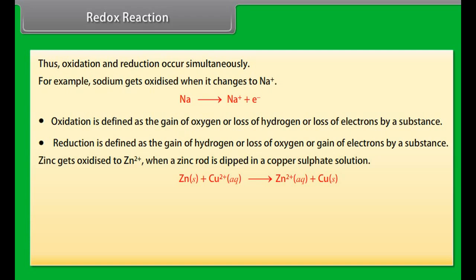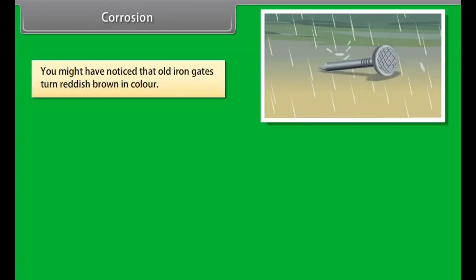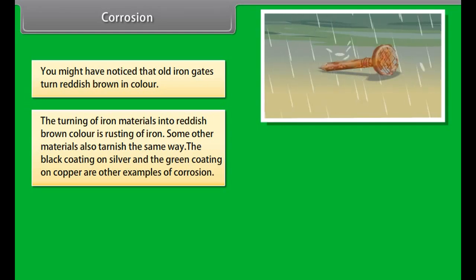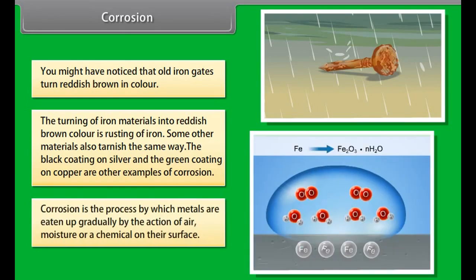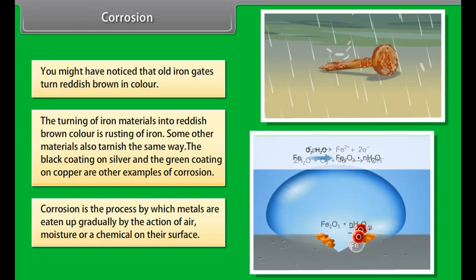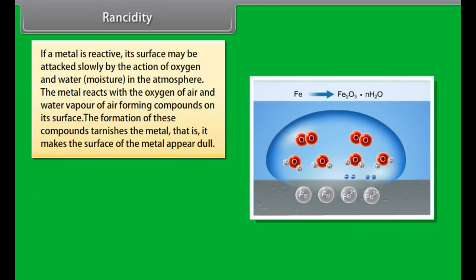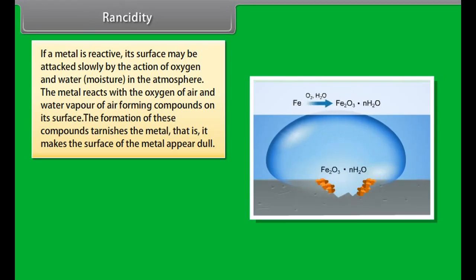Redox reactions: These are reactions in which oxidation and reduction take place at the same time — one substance is reduced while the other is oxidized. Activity: Take a china dish, add copper powder and heat it. The surface of copper powder changes to black because oxygen combines with copper to form copper oxide (CuO). If hydrogen gas is passed over this heated material, the black coating turns brown as copper is obtained again. Oxygen is removed from cupric oxide — since removal of oxygen is reduction, cupric oxide is reduced to copper. Hydrogen is the reducing agent. Thus oxidation and reduction occur simultaneously.